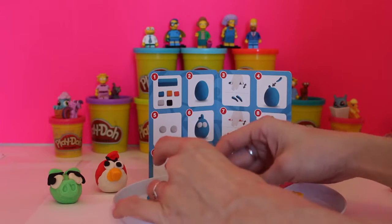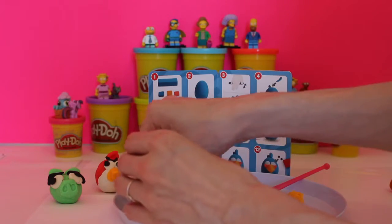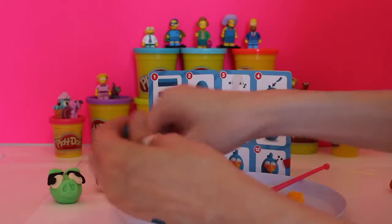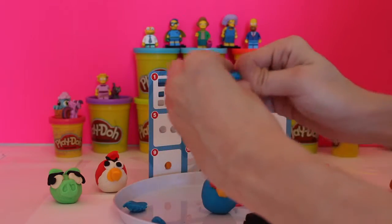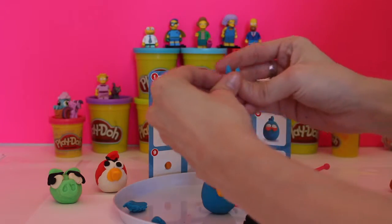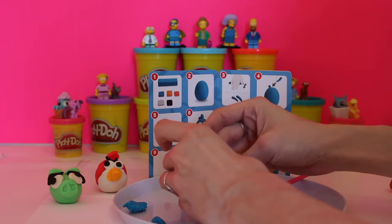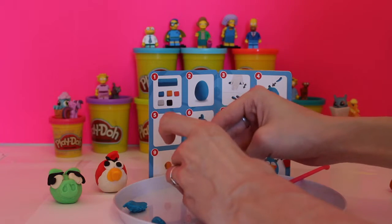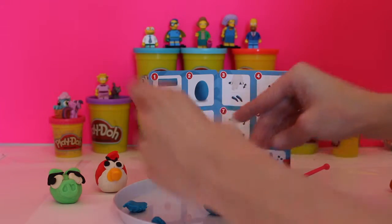So now what we need to do is make him some crazy hair, and then we will finish him off with his signature eyeballs because he needs his eyes. There. Perfect hair.